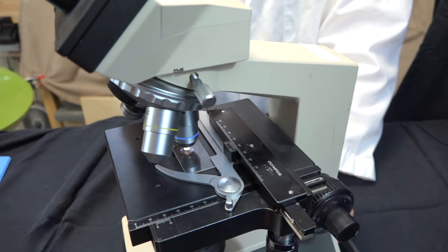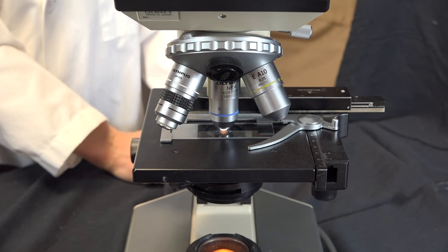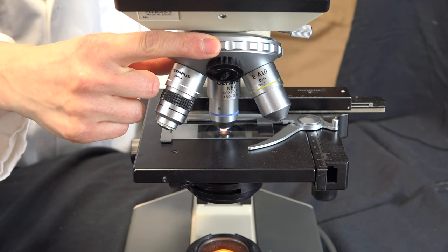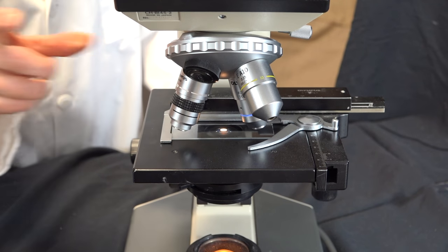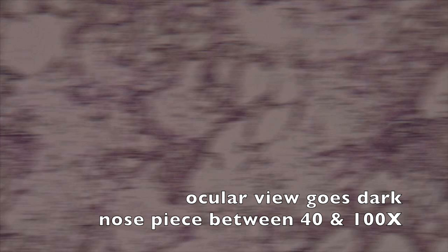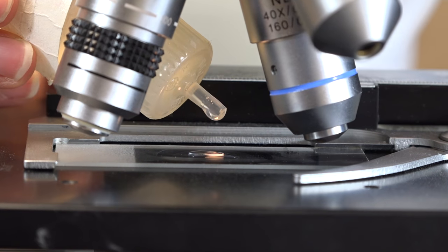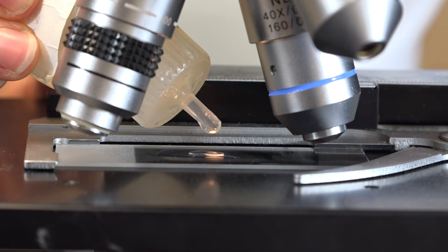Once you've focused on your specimen at 40x, now you're ready to move up to oil immersion. Turn the 40x objective out of the way and put a drop of immersion oil over your specimen.